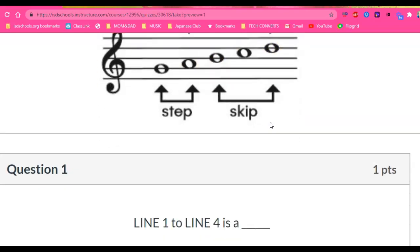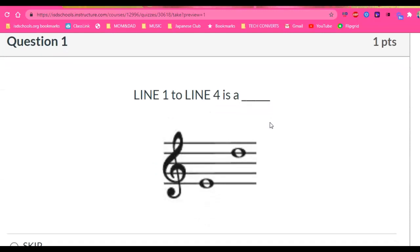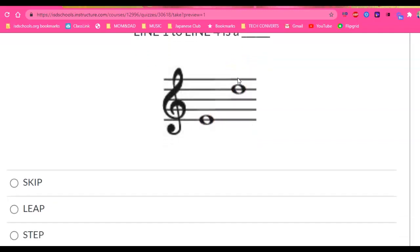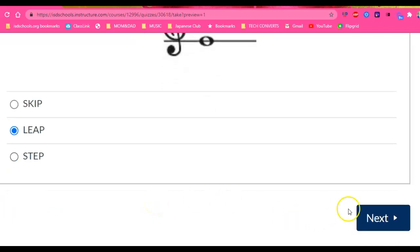So let's take a look at the first question. It says line 1 to line 4. Do you think that's a skip, a leap, or a step? Can't be a step because if it was a step, that pitch would be right here. And if it was a skip, that pitch would be right here on the next line. That is a big jump. You can just look at it and say that that's a leap, that's a big jump.